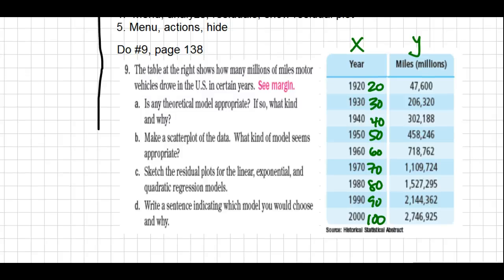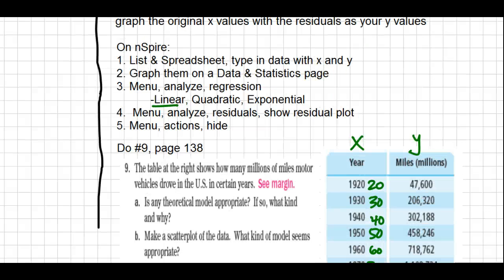After we get the data graphed onto a data and statistics page, we're going to be using menu analyze. It's important for students to write down the models for each as well as show or copy the residual plot that's given. We're going to do this three times to illustrate each one individually. It is possible to do all three together, but I think you'll find it's easier if you just do them one at a time. Just remember menu analyze regressions and menu analyze residuals. Then we're going to hide each one as we go.